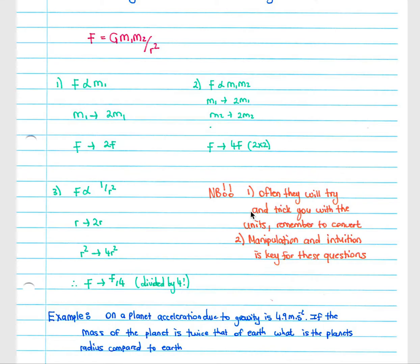A few important things to remember in this section. Firstly, they will often try to trick you with the units they give you. They may give your mass in grams or kilograms, and you need to use consistent units, or the radius may be given in centimeters which you need to convert before putting it into your formula. Secondly, manipulation and intuition are key in this section. You need to know how to use and manipulate the formulas, what is directly proportional to what, and which values fit where. You need to use your intuition to see what happens as you increase and decrease by the given factors.